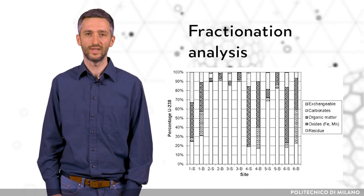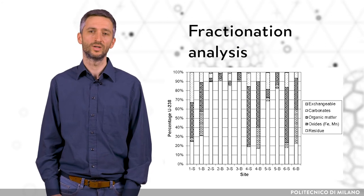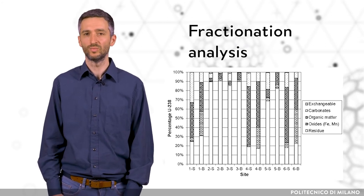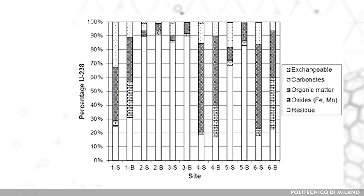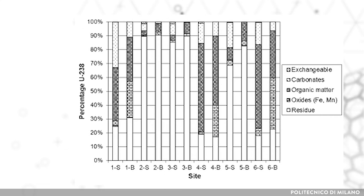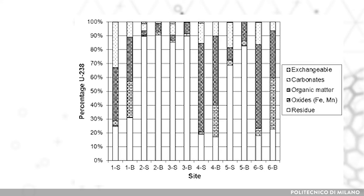Fractionation analysis is often considered a first rough estimation in assessing radionuclide speciation. Here the sample is subjected to several extraction solutions to assess how much of the radionuclide is present in operationally defined fractions, such as exchangeable, bound to organic matter, carbonates, iron-manganese oxides, and residual fraction.